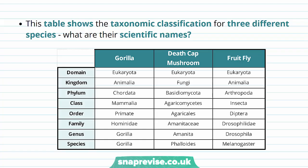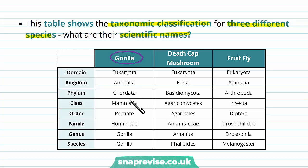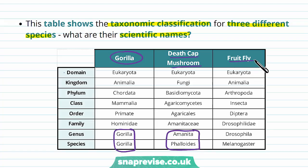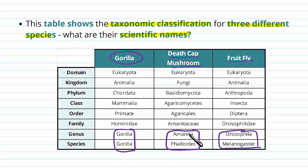This table shows taxonomic classifications for three different species and their scientific names. The gorilla is classified as Eukaryota, Animalia, Chordata, Mammalia, Primates, Hominidae, Gorilla gorilla — so its scientific name is Gorilla gorilla. The scientific name for a death cap mushroom is Amanita phalloides, and the fruit fly is called Drosophila melanogaster. This demonstrates a global scientific way of naming things.